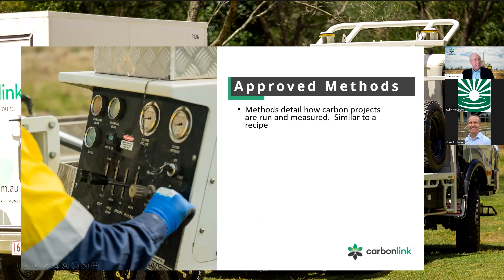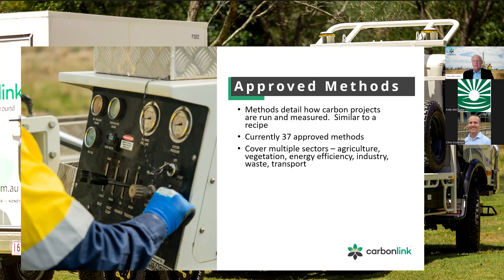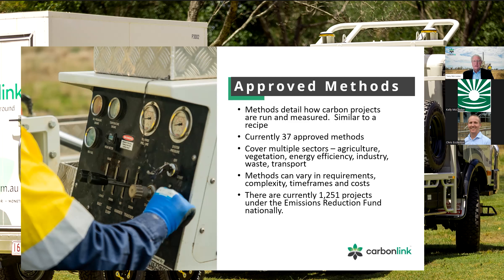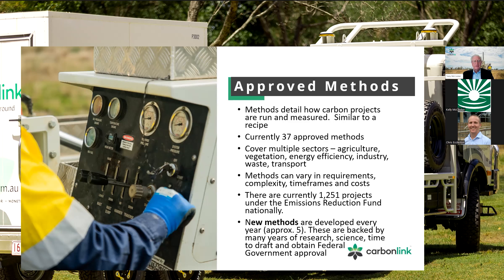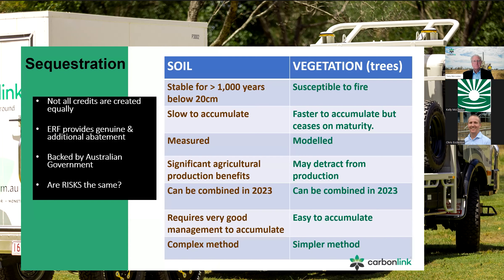Approved methods detail how projects are run and measured — these are the rules laid down by the regulator, basically like a recipe for how you do things. There are at least 37 methods approved now across all sorts of different areas and sectors, including agriculture. They vary in their requirements, complexity, and timeframes. As of a few months ago there were 1,251 projects registered. The regulator targets five new methods per year.